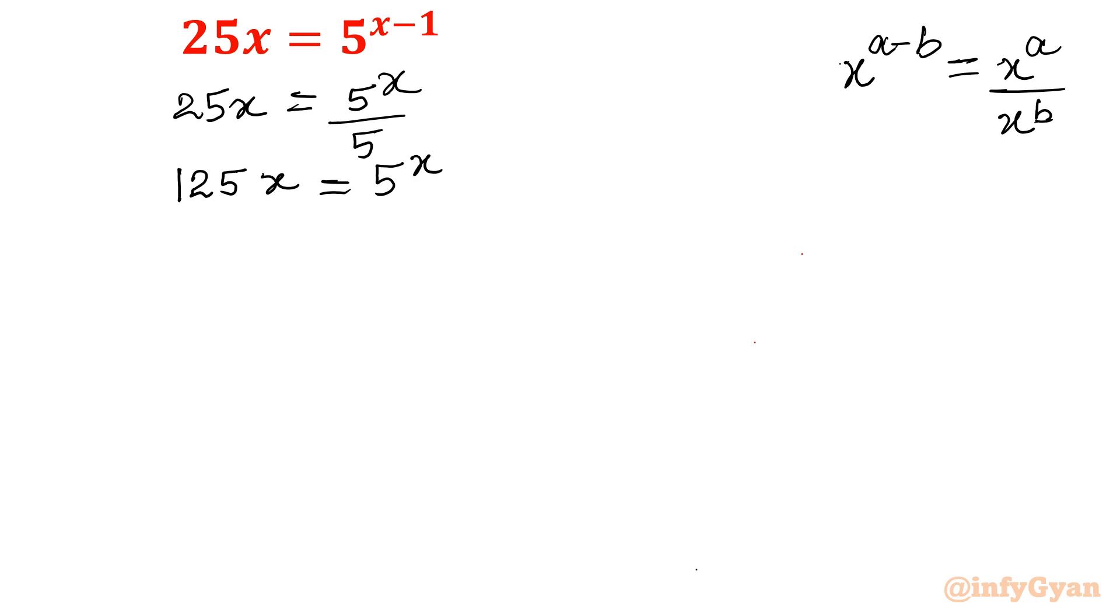Now let us take 5 power x in the denominator. So I will divide both sides by 5 power x. Now we know that 5 power x is always greater than 0, it cannot be equal to 0. So we can divide.